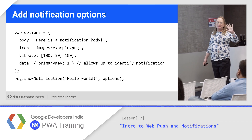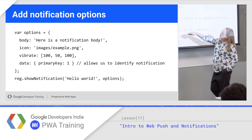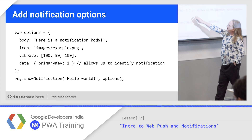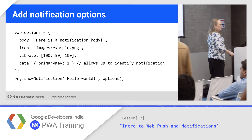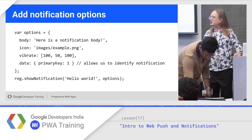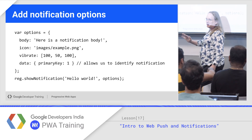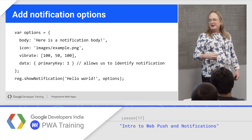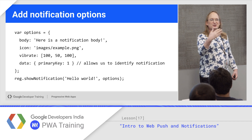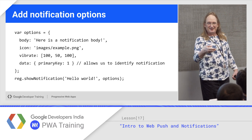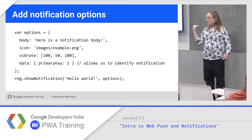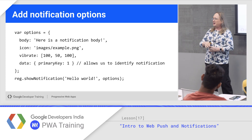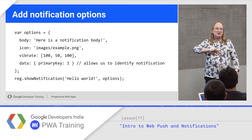Notification options you can play around with in those demos include things like the text, the image, and vibration pattern — so long, short, long — you can actually control the vibration. You can also put a key on your notifications. The reason for this: let's say you're sending a series of notifications from a home security service. You send a notification that someone opened the front door, then someone entered the vault, then someone took the money. You don't need four of those notifications, you only need the latest one. So if you put a primary key on the notification, you can differentiate between notifications in a series and only show the most current one. It also lets you know which notification the user clicked when there's more than one on screen.